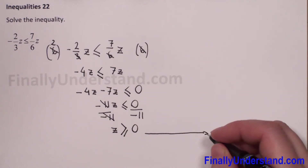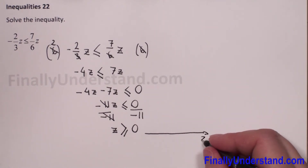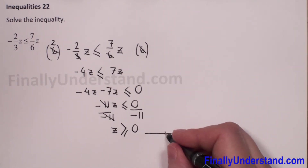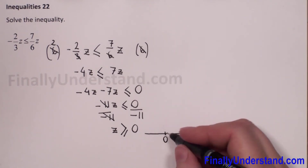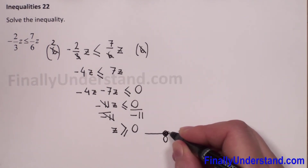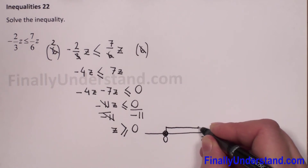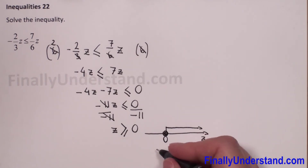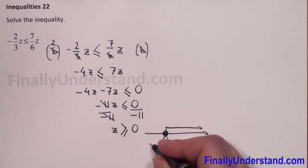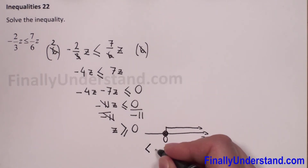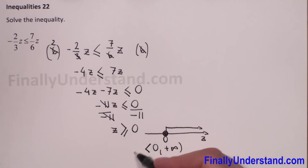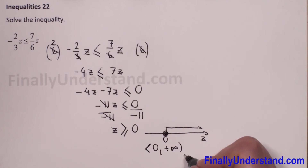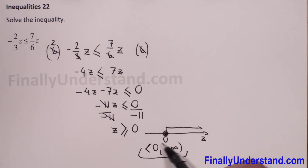Let me draw the number line. Zero is included, and we're going to positive infinity. So our solution is the interval from zero to positive infinity, closed at zero.